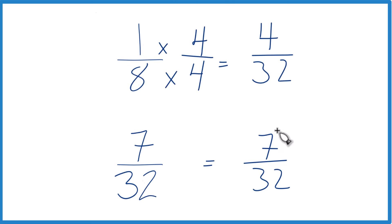So when we compare these here, 7 is greater than 4, so 7/32, that's greater than 4/32. These are equivalent, so 7/32 is also greater than 1/8.